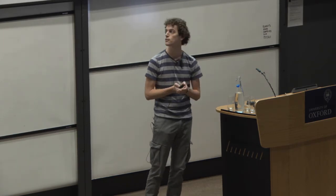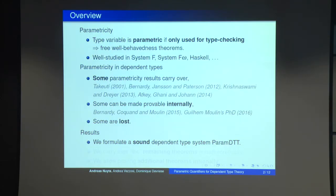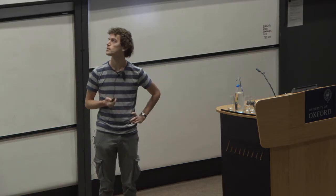So what are our results? We formulate a sound-dependent type system, which we called PRAMDDT. We carry over the remaining metatheorems, the remaining parametricity theorems metatheoretically. The V is between quotes, because it's a bit of an informal claim, but I think we can make it. And we allow proving additional theorems internally, so in the logic of dependent type theory.